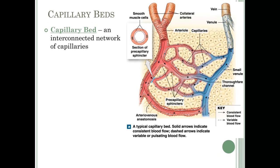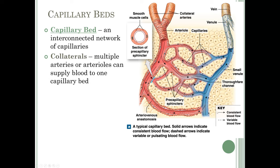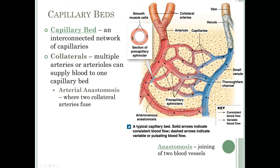A capillary bed is an interconnected network of capillaries connected to each other as well as to an arteriole and a venule. Sometimes multiple arteries or arterioles supply one capillary bed — these are called collaterals. When two blood vessels come together and join up, that is called an anastomosis. Where two collateral arteries come together, that is an arterial anastomosis, with both delivering blood to one capillary bed.